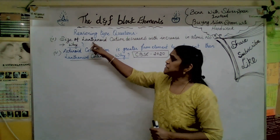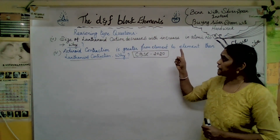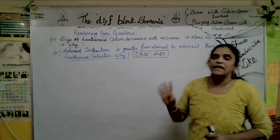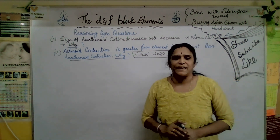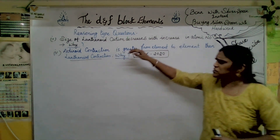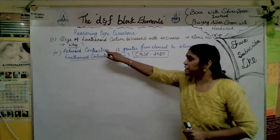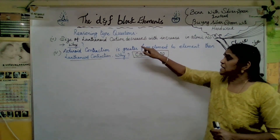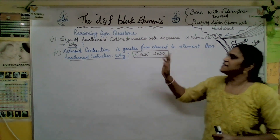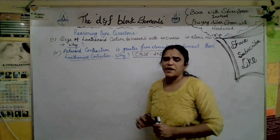First question: the size of lanthanoid cation decreases with increase in atomic number - why? The second question, which is related to the first: actinoid contraction is greater from element to element than lanthanoid contraction - why?